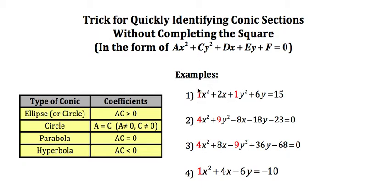In this first example a is one and c is one, so if I take a and c and multiply them, one times one is one. One is greater than zero, so then it fits this first scenario.